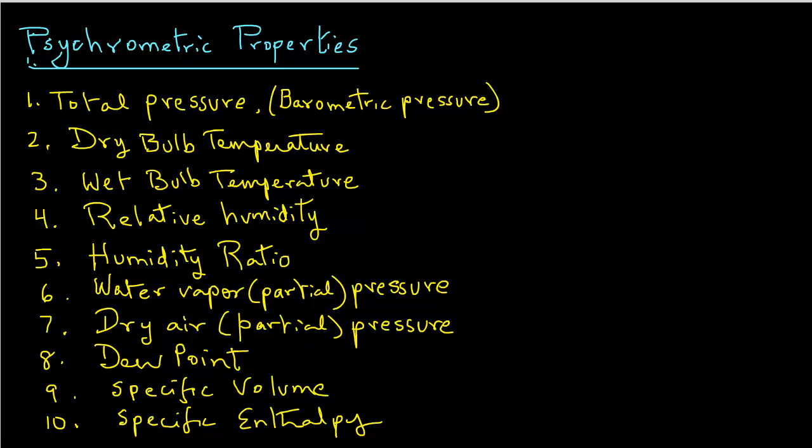There are 10 psychrometric properties of air that are important to us in calculations involving food handling, storage, and dehydration processes.